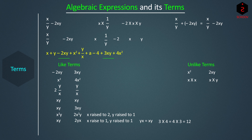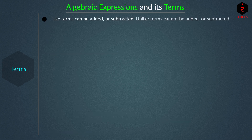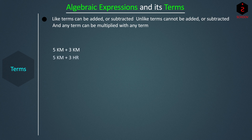So we can add −2XY and 3XY to give XY, and X² and 4X² to give 5X². The expression becomes X + Y + XY + 5X² + Y/X + A − 4. Like terms can be added or subtracted; unlike terms cannot be added or subtracted. And any term can be multiplied with any term. This makes sense — 5 km and 3 km can be added, but not 5 km and 3 hours. Only likes can be added or subtracted.